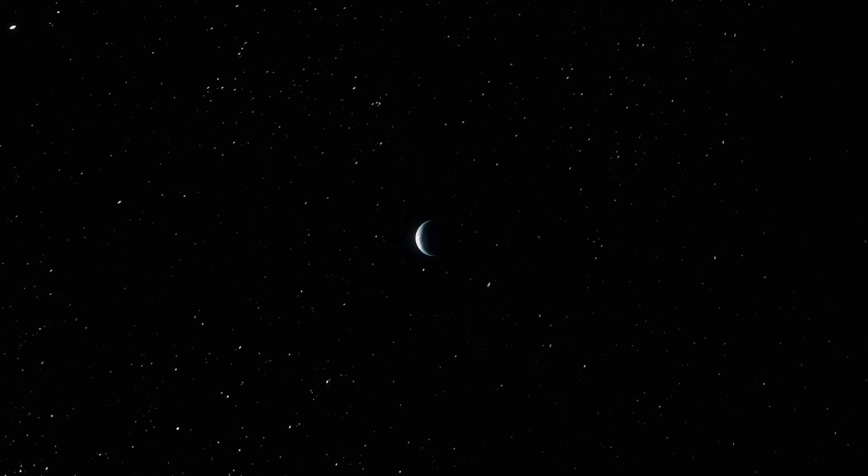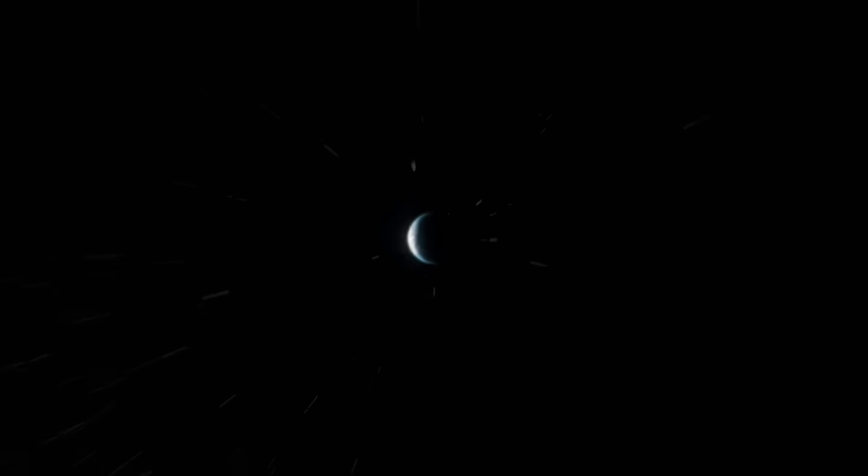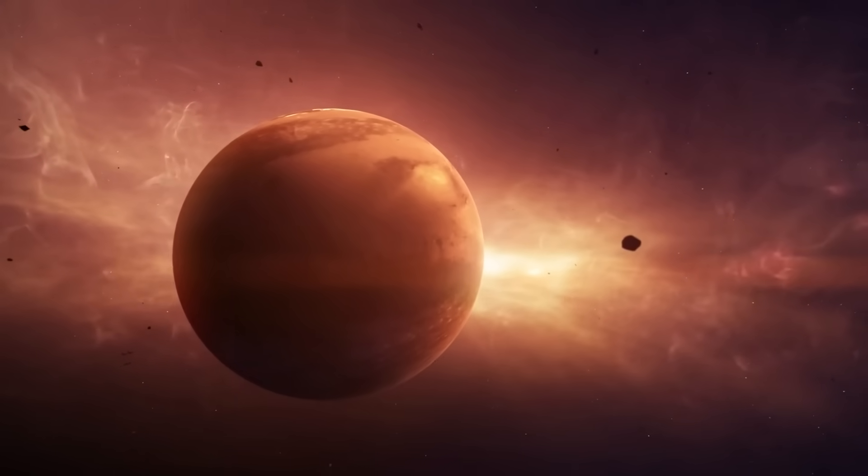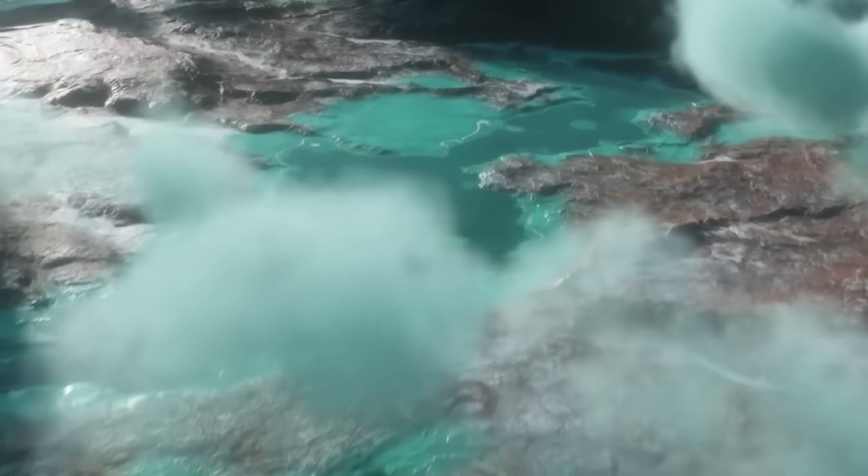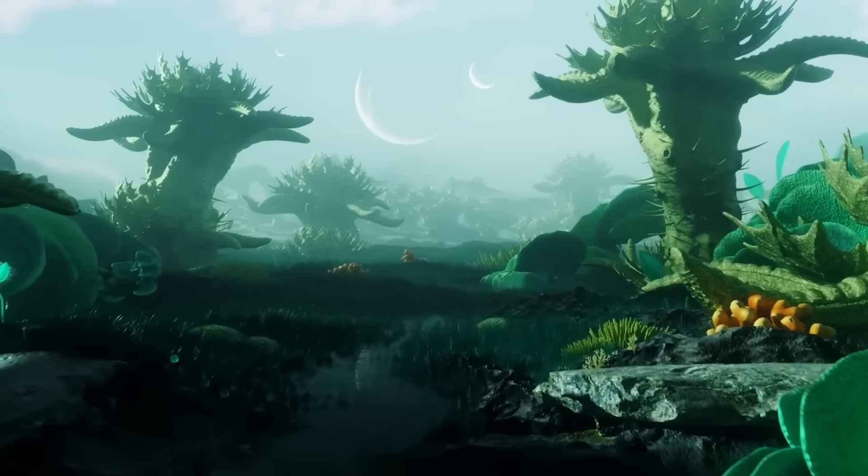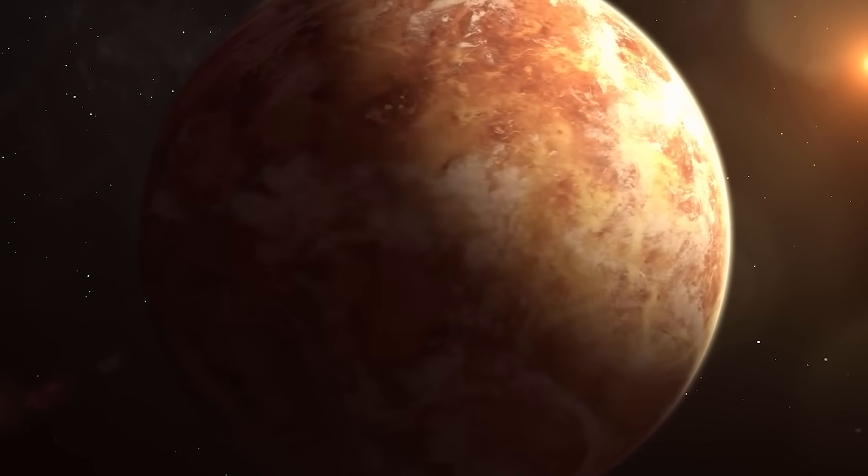This image isn't just a scientific win, it's a moment that changes how we see the universe. Proxima b is no longer a mystery. It's a real place with light, shadow, heat, and maybe more. We don't know yet if life is there, or if it ever was. But now, for the first time, we can look at that planet and say, we've seen it.